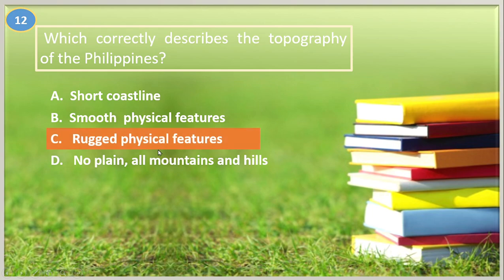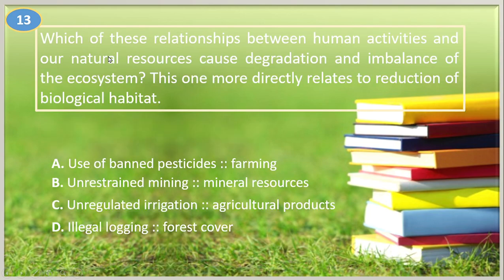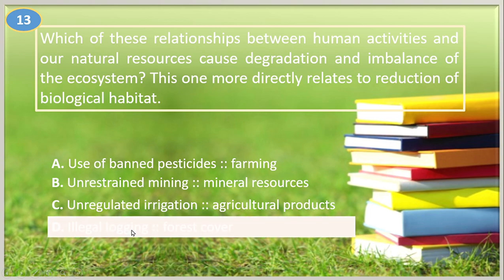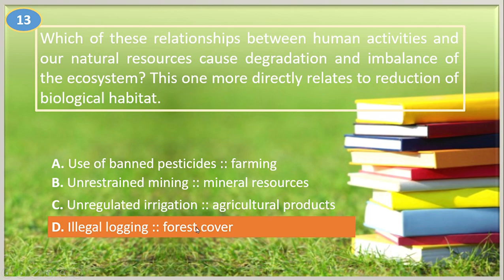Number thirteen. Which of the following relationships between human activities and natural resources most directly relates to the reduction of biological habitat? A. Use of banned pesticides, farming; B. Unrestrained mining, mineral resources; C. Unregulated irrigation, agricultural products; D. Illegal logging, forest cover. The answer is letter D, illegal logging. Because of this activity, animals lose their habitat.